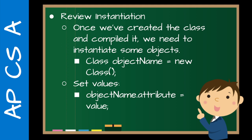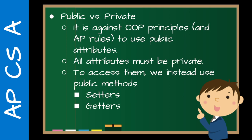We were setting values just directly — object name dot attribute equals value. We could do that because they were declared as public. But now we're going to declare them as private, so we're not going to be able to do that. It is against object-oriented programming principles and AP rules to use public attributes. The AP will take off points for using public attributes, so make sure that students switch from now on — never use public. For attributes, they should all be private. And when we access them, we instead need to use the public methods, which are called setters and getters.